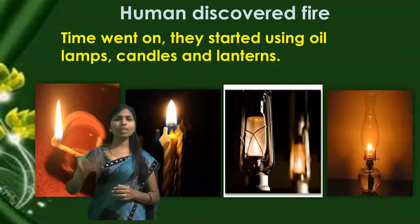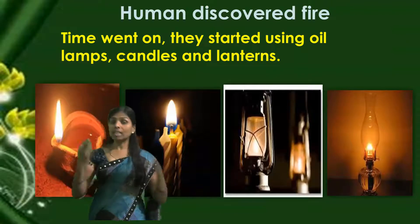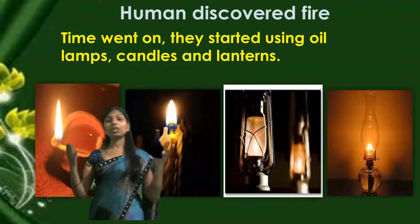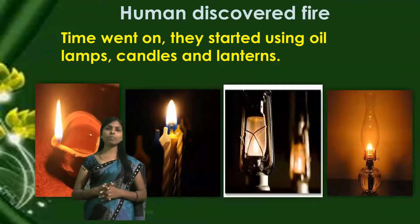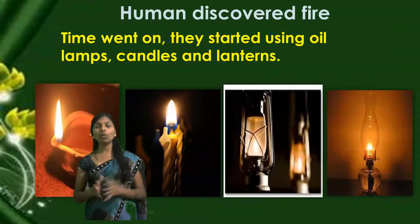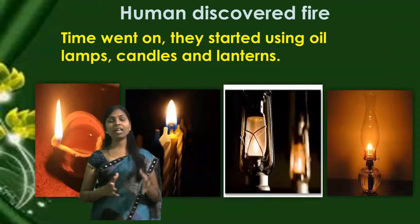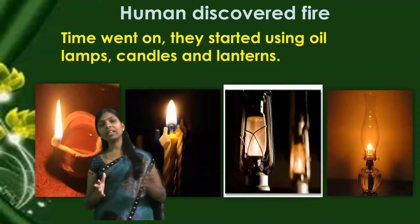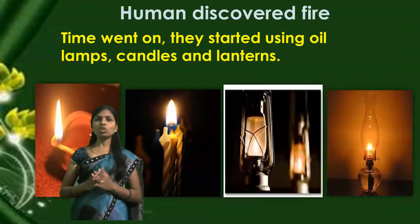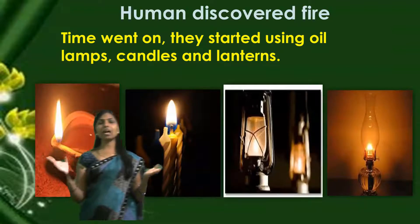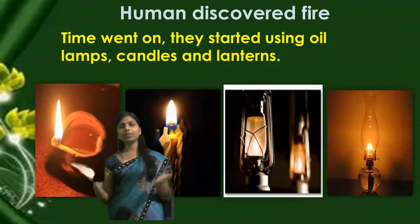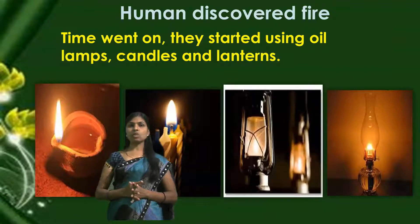As time went on, they started using different types of lamps like oil lamps, candles, and lanterns. Here I have shown you some examples of these artificial sources of light.